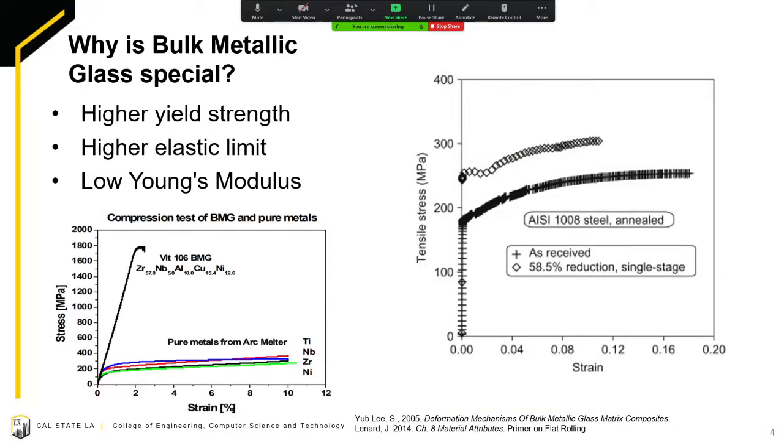BMG is special because it has a high yield strength and high elastic properties allowing it to be used in a wide range of purposes. Bulk metallic glasses also possess a low Young's modulus as you can see in our stress-strain graph of Vitreloy 106 when compared to AISI 1008 steel.